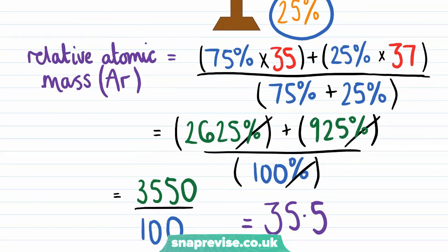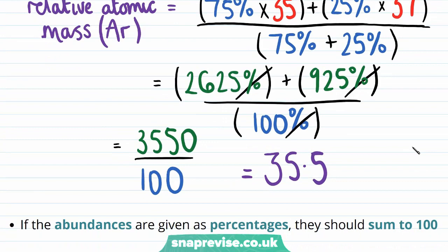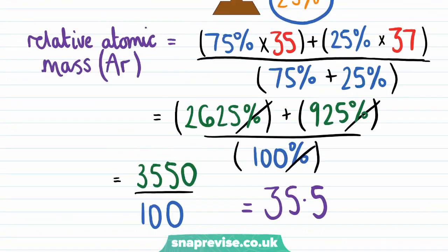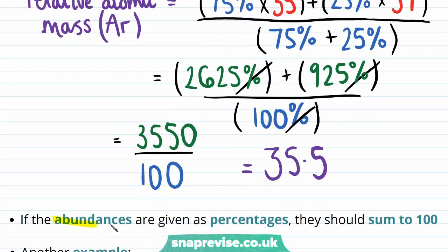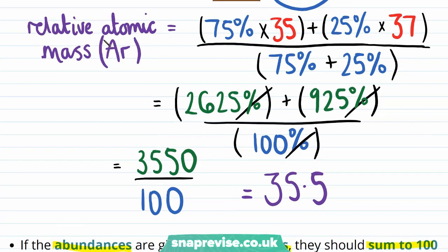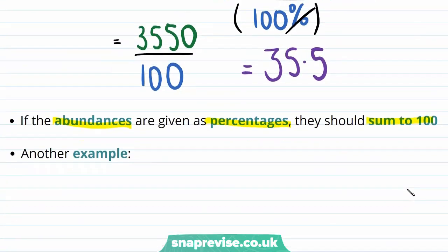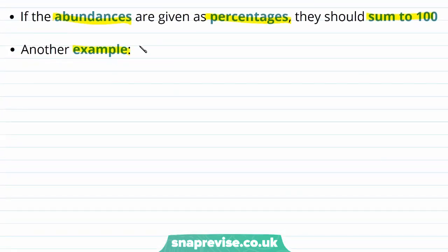In this example we kept the percentage symbols in and then cancelled them out, but in general if the abundances are given as percentages they should sum to 100, because when calculating the relative atomic mass we need to consider all the possible isotopes of that element, which will have a total abundance of 100%. We can now look at another example, this time of an element that has three different isotopes — magnesium.